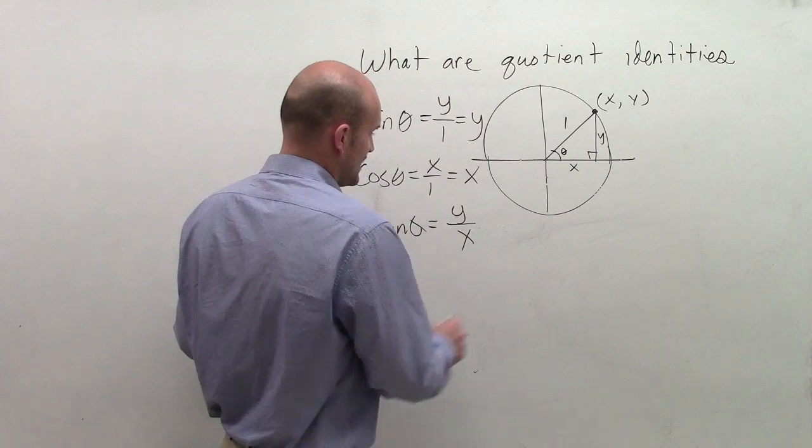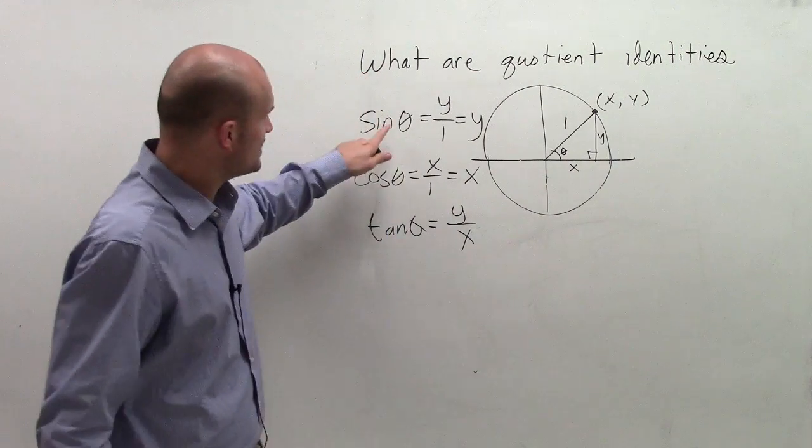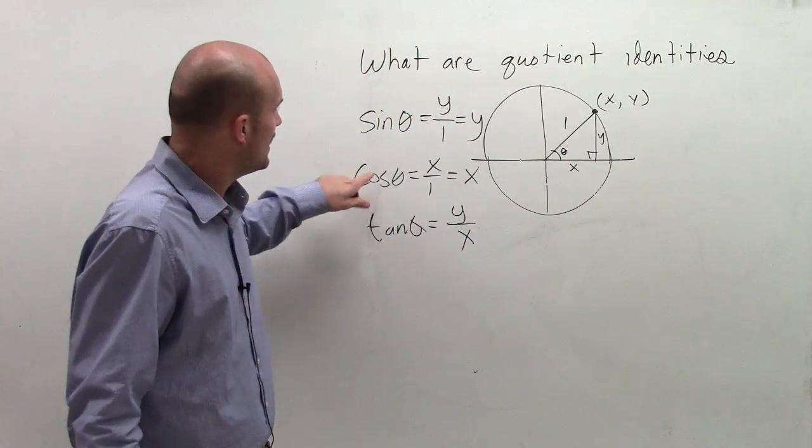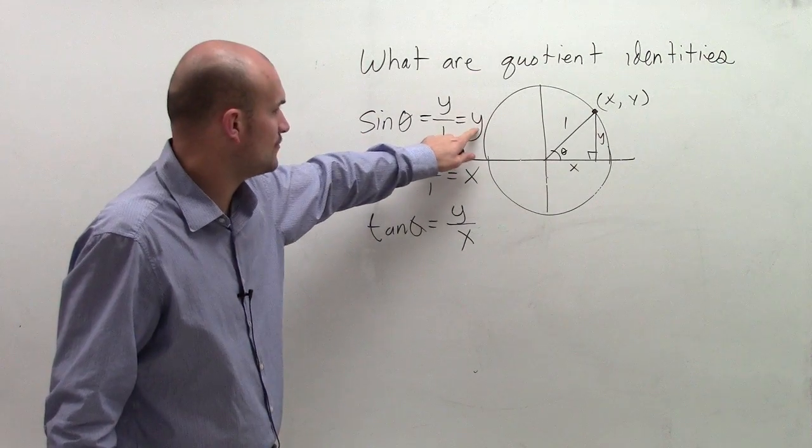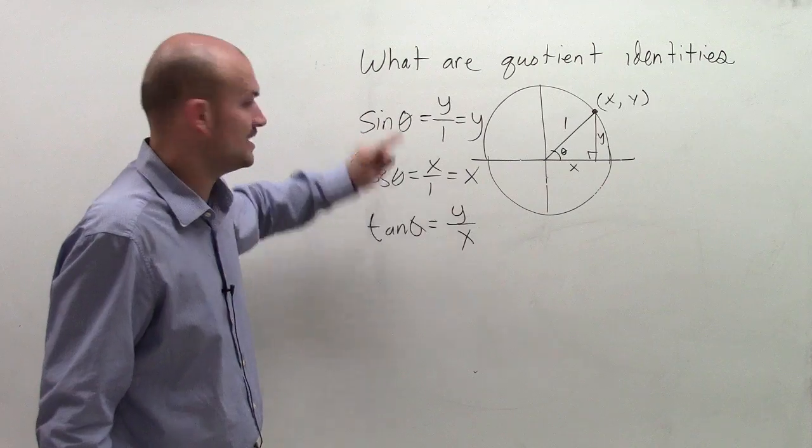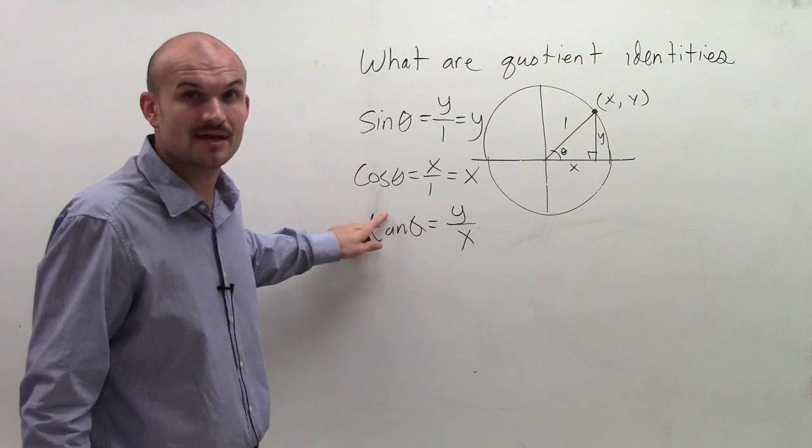So what the quotient identities state is, think about it. If sine of theta equals y and cosine of theta equals x, can I substitute in sine of theta for y and cosine of theta for x?